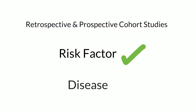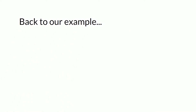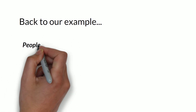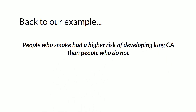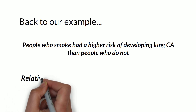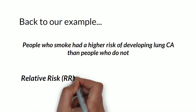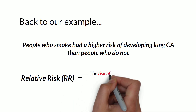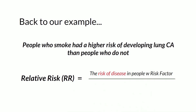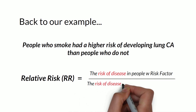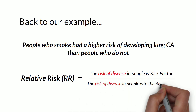Whether it's retrospective or prospective cohort, you know the risk factor. You have a group exposed to the risk factor and a group that hasn't been, and your goal is to find out if they will develop or have developed the disease of interest. We can conclude that people who smoke had a higher risk of developing lung cancer than people who do not — here we are looking at relative risk. Relative risk is the risk of disease in people exposed to the risk factor divided by the risk of disease in people not exposed.